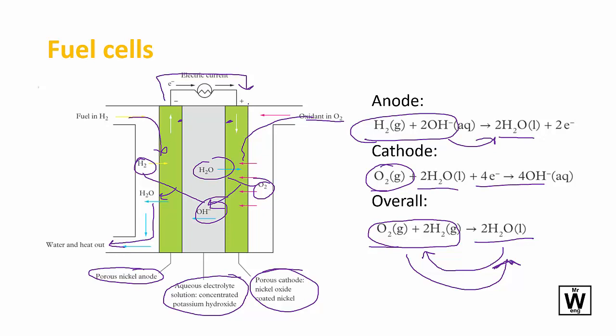The cathode is having the electrons come onto it, so that is a reduction, and it is positive.